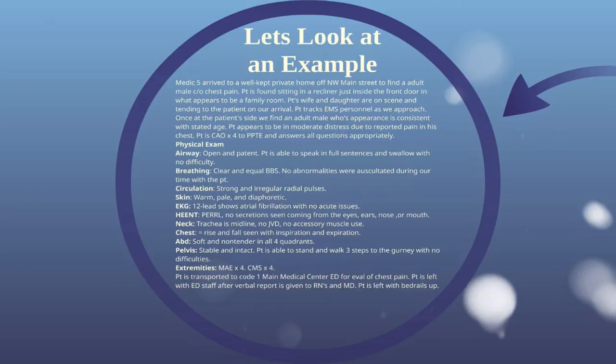So let's look at an example. Medic 5 arrived to a well-kept private home off Northwest Main Street to find an adult male complaining of chest pain. Patient is found sitting in a recliner just inside the front door in what appears to be a family room. Patient's wife and daughter are on scene and tending to the patient on our arrival. Patient tracks EMS personnel as we approach. Once at the patient's side, we find an adult male whose appearance is consistent with stated age. Here you can see we've described the scene, what we walked up to, what the patient was doing when we walked into the house, and who was tending to him.